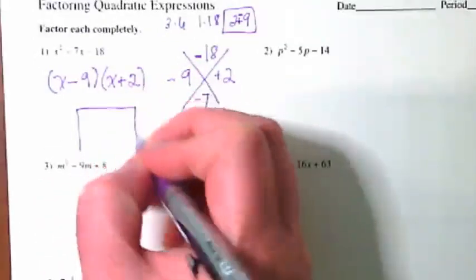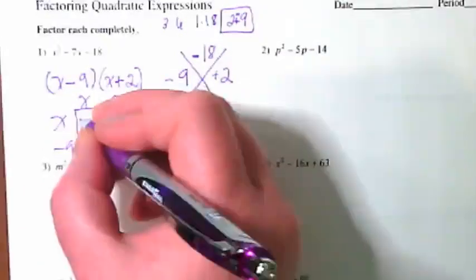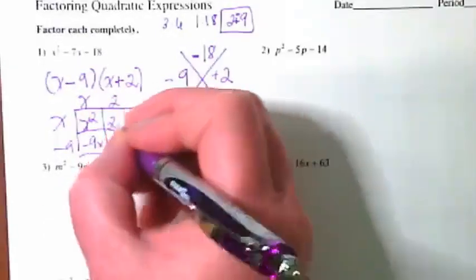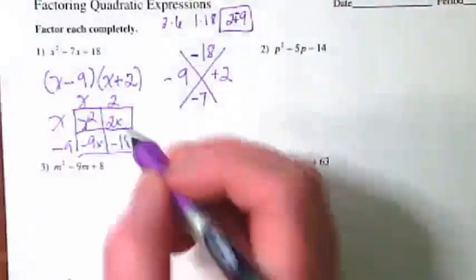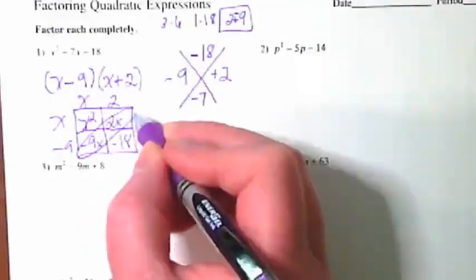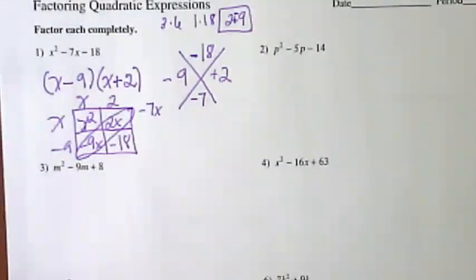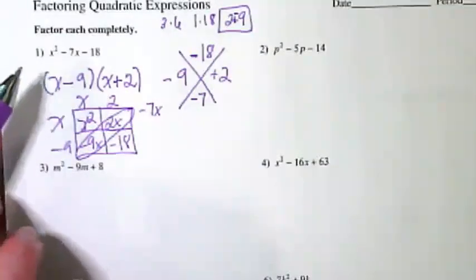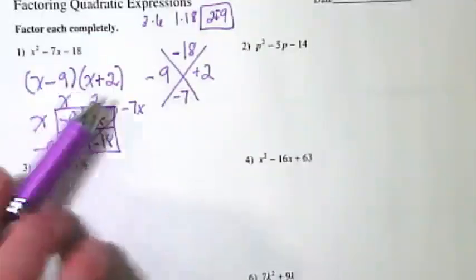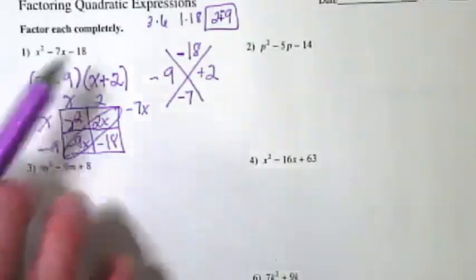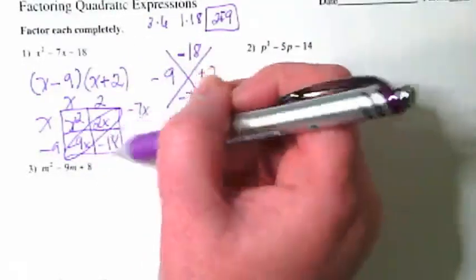So we check our work by putting our box in. This right here is the one that if I'd done this the wrong way it would be showing up right now. And we're ending up with x minus 9 times x plus 2 is equivalent to x squared minus 7x minus 18, because I found this term is this one, these two together are this one, and this one is here.